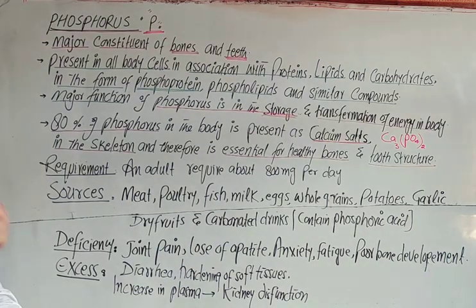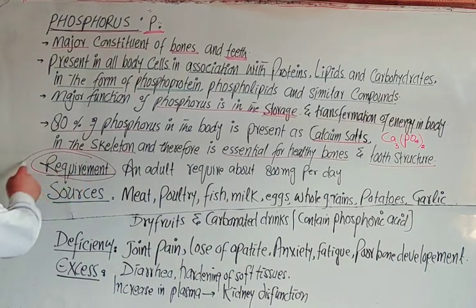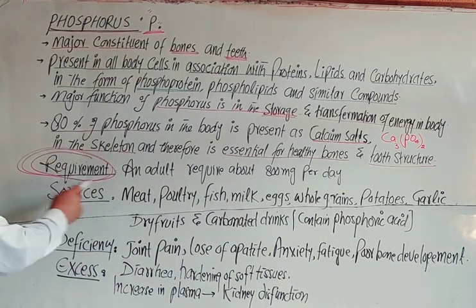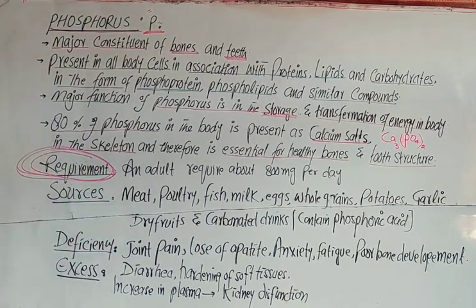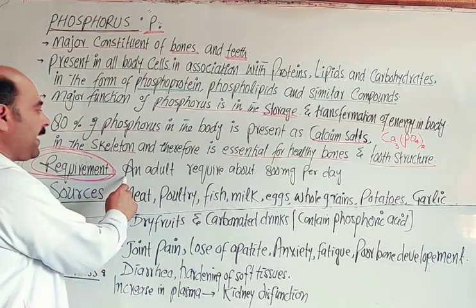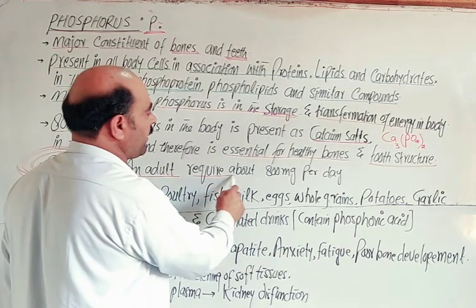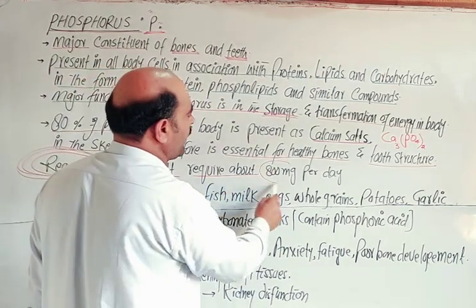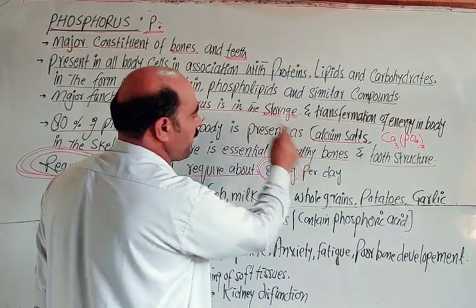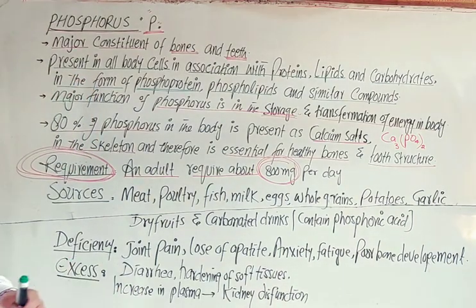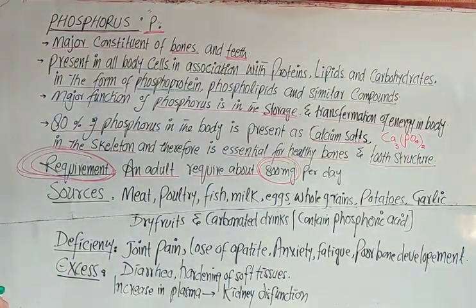Regarding daily requirements, an adult human requires about 800 milligrams per day of phosphorus.